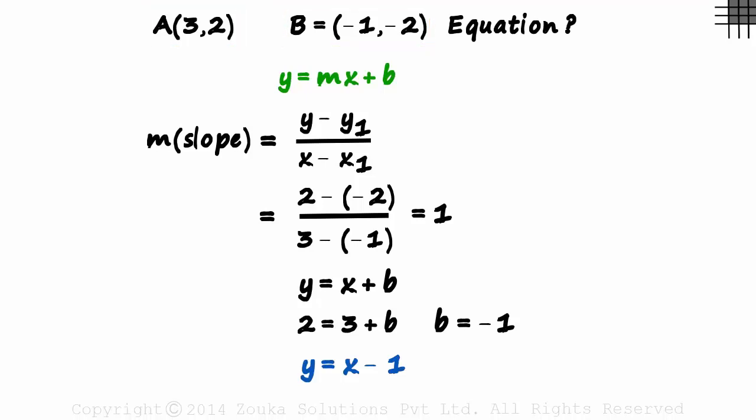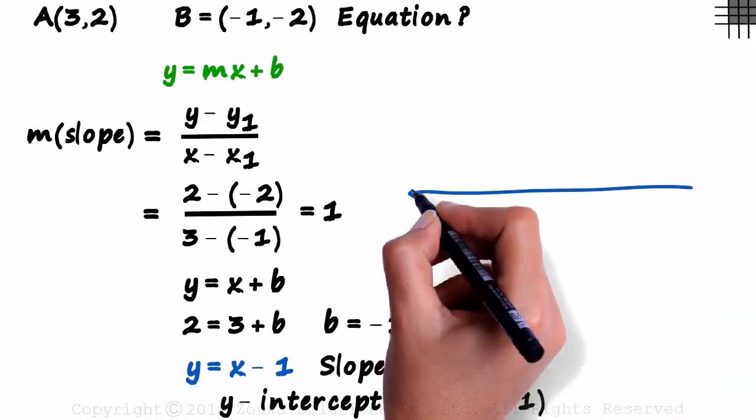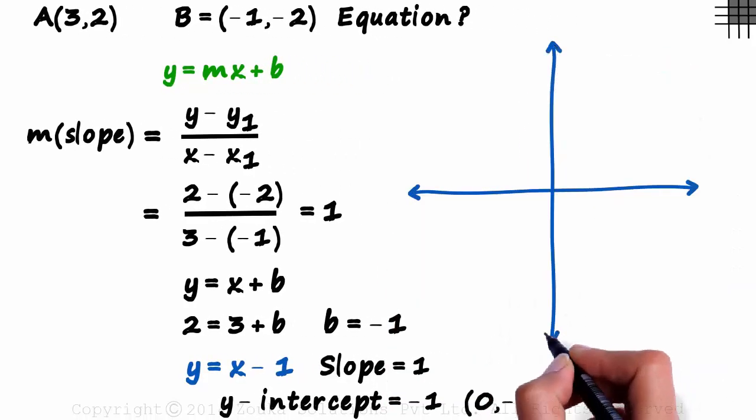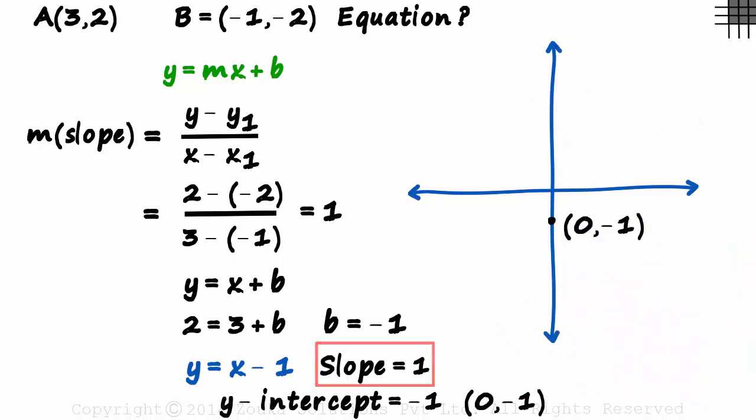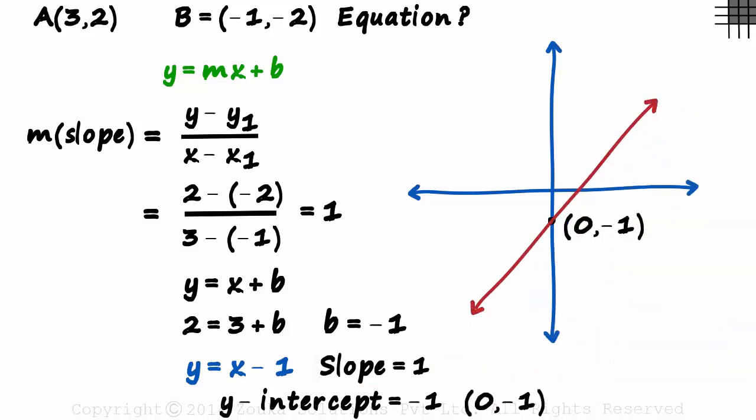Just to understand it a bit better, how will the line look? We have the slope as one and Y intercept as minus one. It means the line passes through zero comma minus one. The line passes through zero comma minus one, and as the slope is positive, the line will look a bit like this. We tried to draw the line using the slope and the Y intercept, just to understand it better.